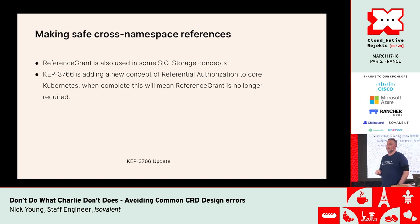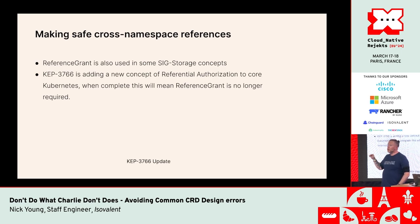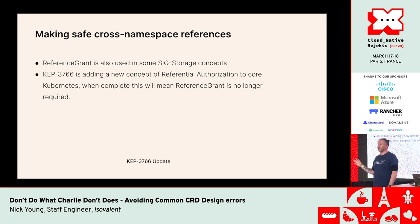KEP 3766 is adding a new concept of referential authorization to core Kubernetes. This will enable arbitrary reference grants for any Kubernetes object. When complete, you'll be able to create an object next to a secret that says 'allow access to this secret from namespaces that look like this, to users that look like this.' Reference grant from Gateway API may no longer be needed. Rob Scott and others are doing interesting work on this KEP.